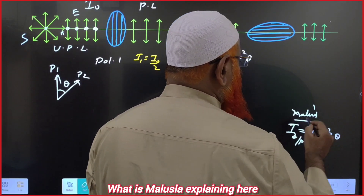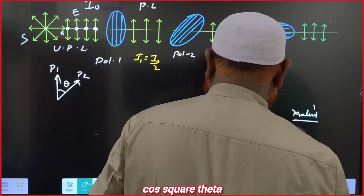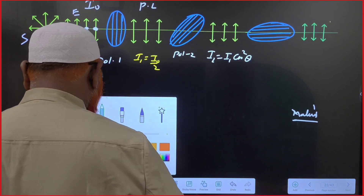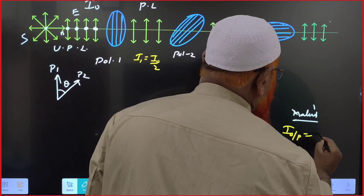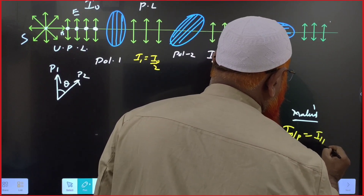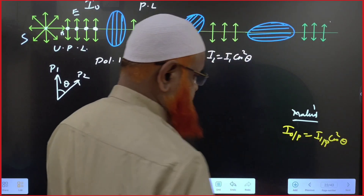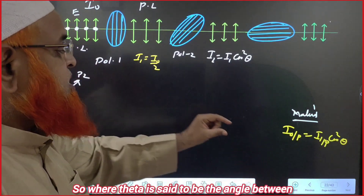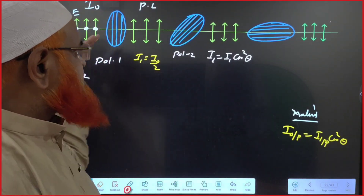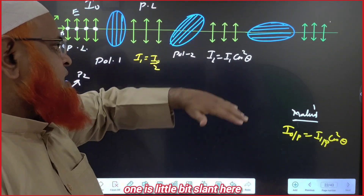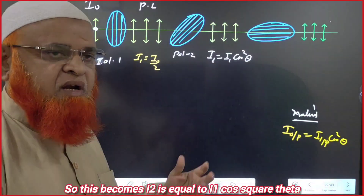Malus's Law states that the output intensity equals the input intensity times cos²θ, where theta is the angle between the two polarizers — one is vertical and the other is slightly slanted. So I2 = I1·cos²θ.